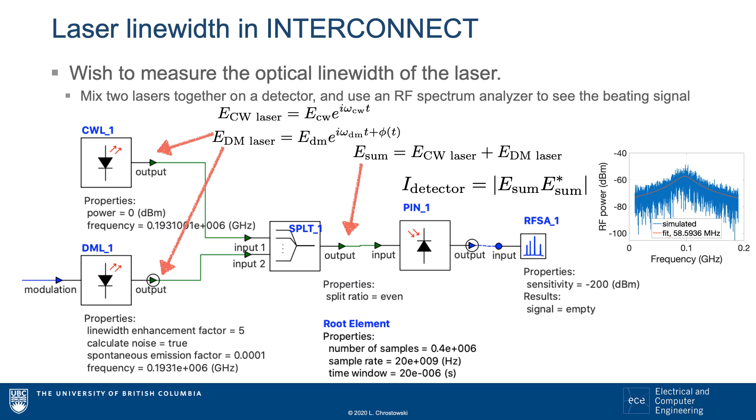To understand how this experiment works, we begin with an electric field description of each laser. The two lasers operate at slightly different frequencies. In this example, one is at 193.1 terahertz and the second is detuned by 0.1 gigahertz.